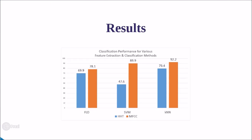As shown here by this bar graph, the final classification results showed that HHT feature vectors performed poorly when compared to the results from MFCC feature vectors for all three classification methods.